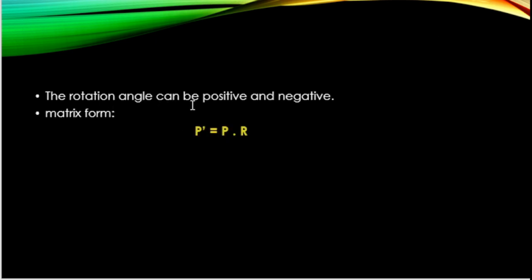The rotation angle can be positive or negative. The matrix form of rotation is P' = P · R, where R is the rotation matrix.